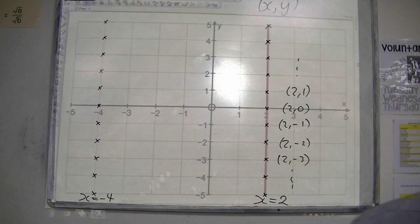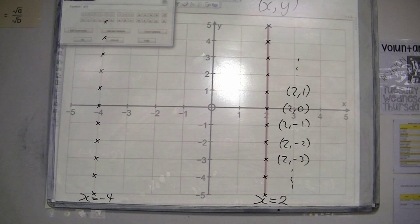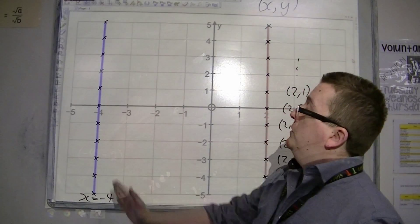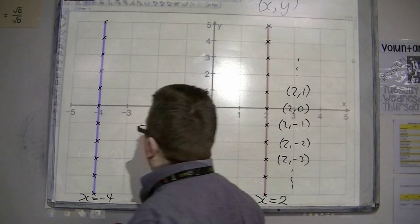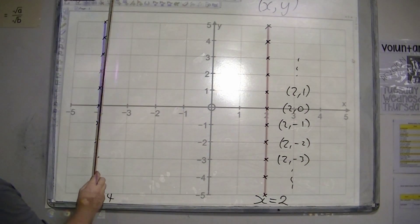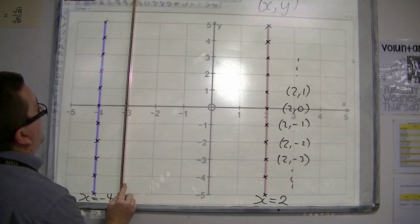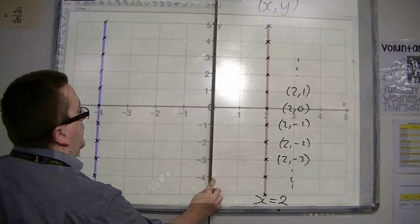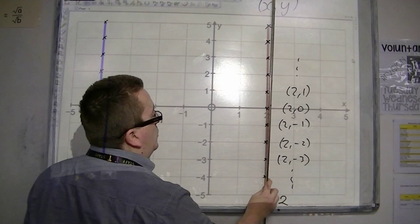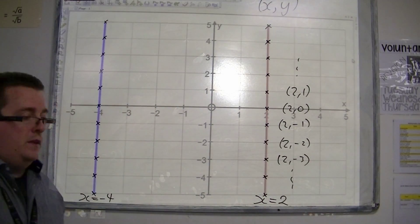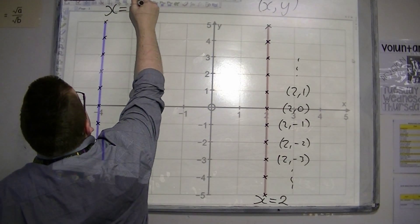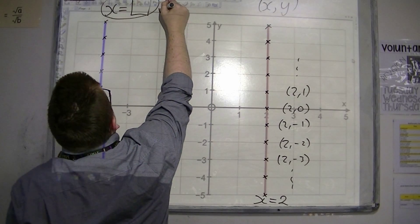So x equals minus 4 is this vertical line. That means x equals minus 3 is there, x equals minus 2, x equals minus 1, x equals 0, x equals 1, 2, 3, 4, 5, and so on. So x equals something represents a vertical line.